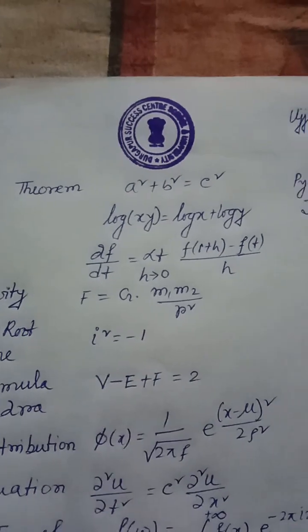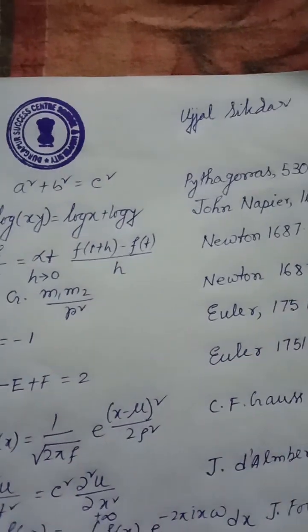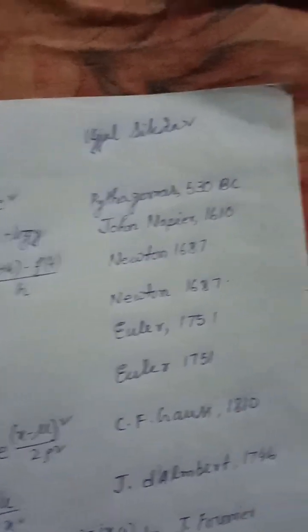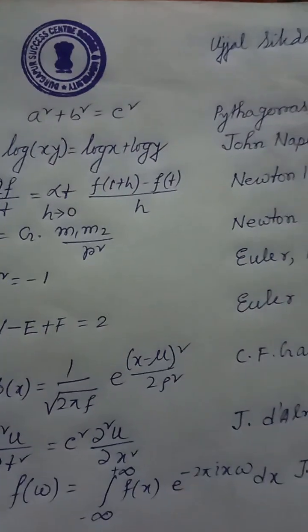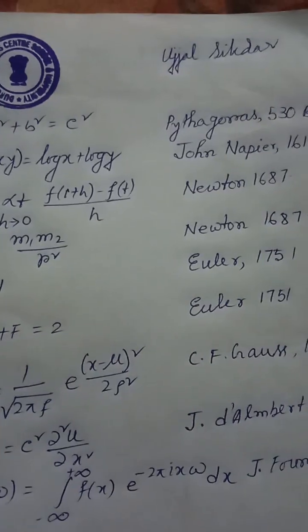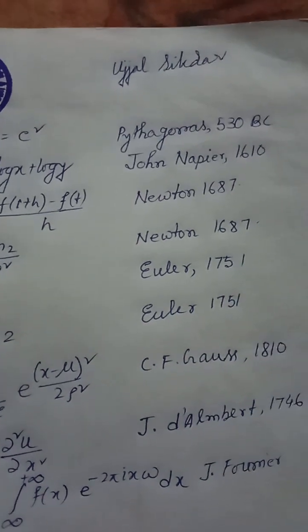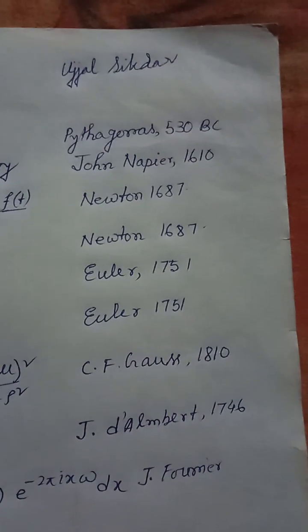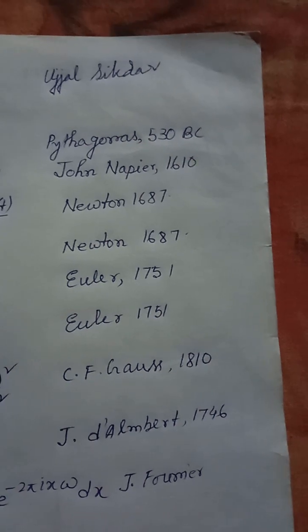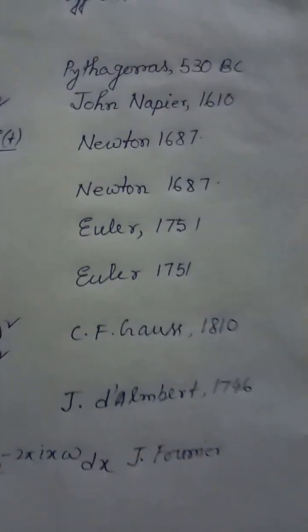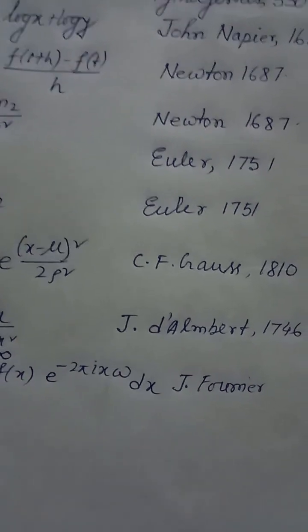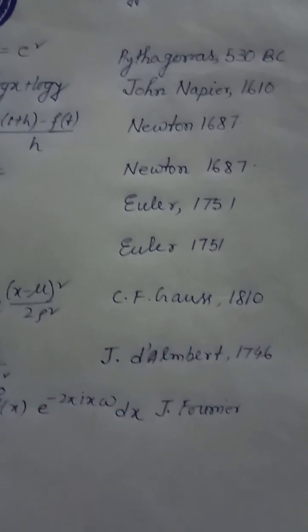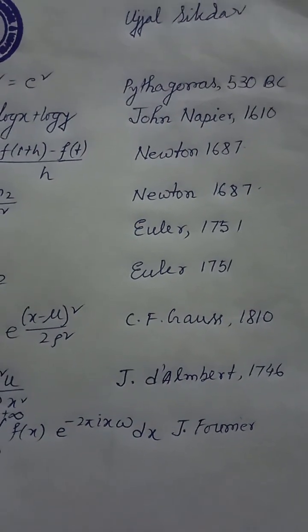Equation 6: Euler's formula for polyhedra — V − E + F = 2, Euler, 1751. Equation 7: Normal distribution — φ(x) = (1 / √(2·σ²·π)) · e^(−(x−μ)² / 2σ²), Gauss, 1810.